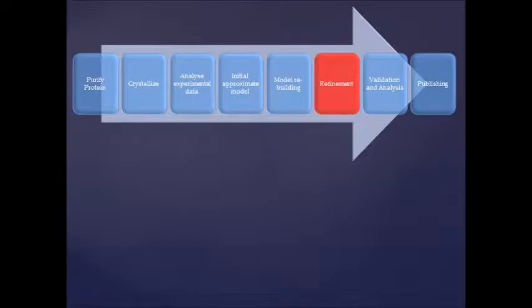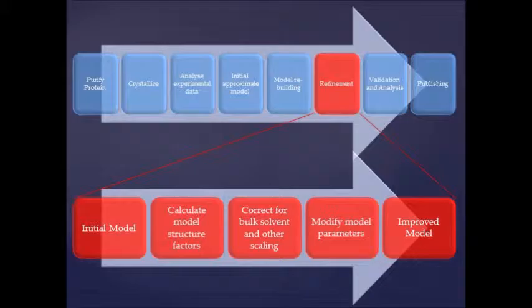The process of improving the model involves calculating model structure factors, correcting for bulk solvent and other scaling, and modifying the parameters of the model. If the final model does not meet specifications, such as enzymatic activity, then we may need to go back and recalculate the structure factors. In some cases, we may need to go all the way back and rebuild our model.